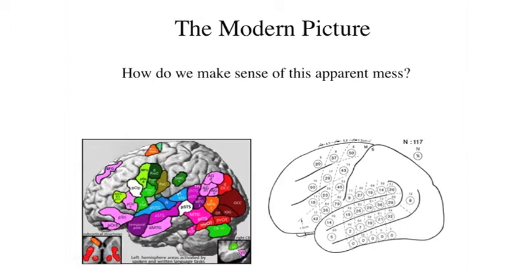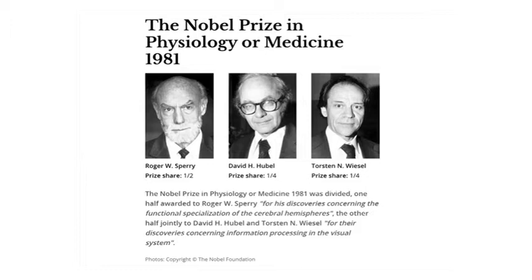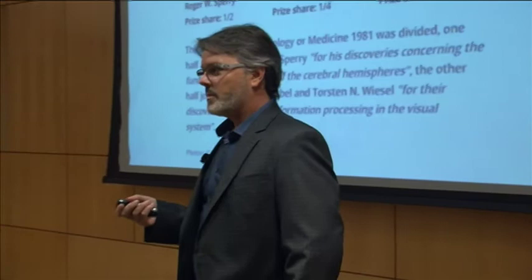My approach has been top-down — understand what the puzzle looks like, then fill in the pieces. I've taken an evolutionary comparative approach, and I've often said that I've learned more about language by studying vision than by studying language. Comparative approaches are very common in our field. In 1981, Roger Sperry shared a Nobel Prize with Hubel and Wiesel — Sperry for discoveries concerning functional specialization of the cerebral hemispheres, and Hubel and Wiesel for information processing in the visual system.